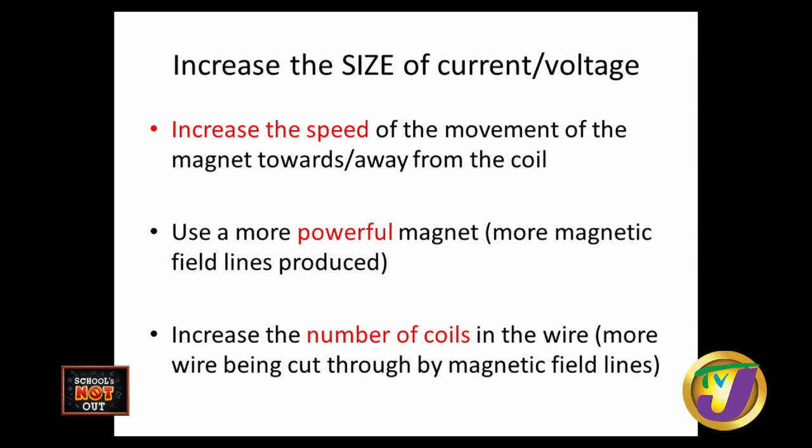How to increase the induced current? We can increase or rapidly remove the magnet — if we move it slowly, small current; if we move it fast, large current. Another way is to use a more powerful magnet — a larger magnet will cause a greater change, and greater change means greater induced current. The third way is to increase the number of coils or turns in the wire. So three things: move the magnet or coil faster, use a more powerful magnet, or increase the number of coils.